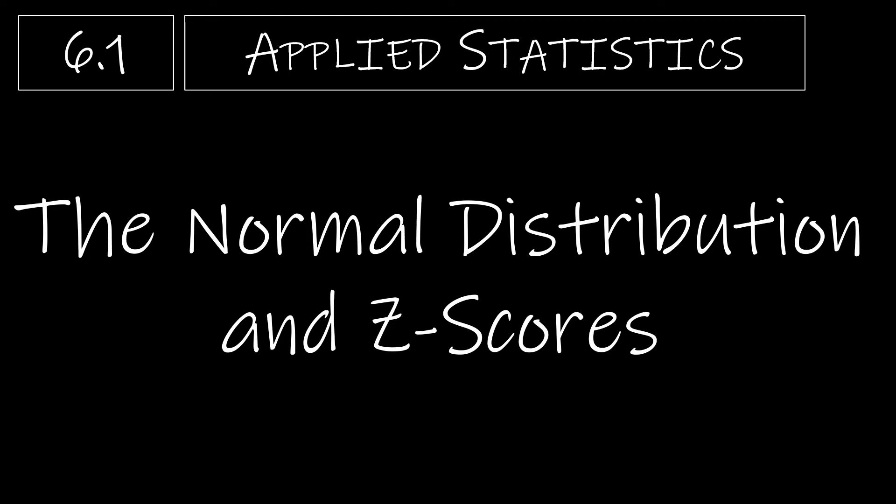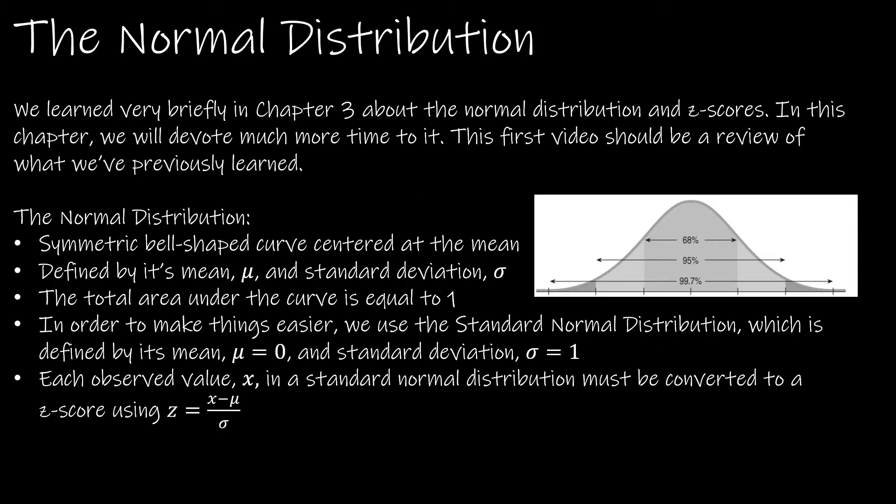In this video, we're going to look at the normal distribution and z-scores, and my hope is that everything we're going to talk about in this short video is review from Chapter 3. The basics that we've already learned is that we have a symmetric bell-shaped curve, and we center that at the mean. Then we look at the standard deviation, and we say if I add the standard deviation once or twice or three times, or I take the mean and subtract the standard deviation once or twice or three times, that's going to give me 99.7% of my values.